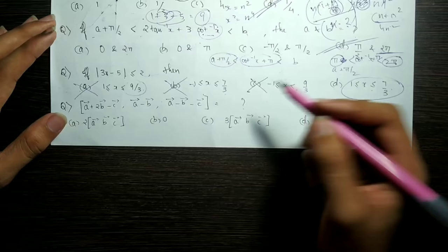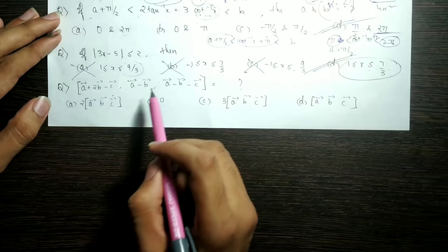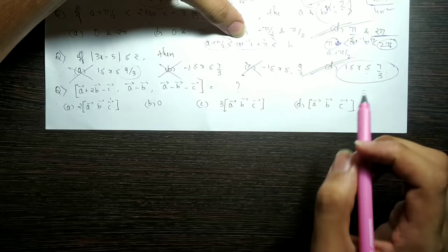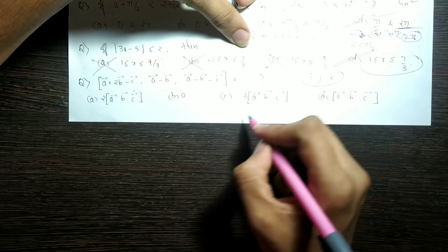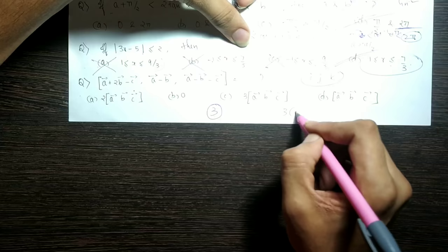This question: A plus 2B minus C. A minus B is not the same. I have already marked it. A, B, C and I, J, K. That's the box. I think the final answer is 3. Box of I, J, K is 1. So 3 into 1. So option C is correct.